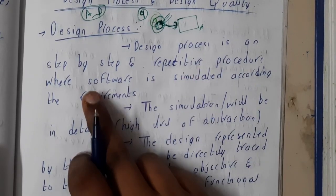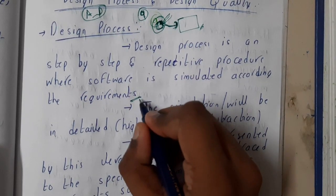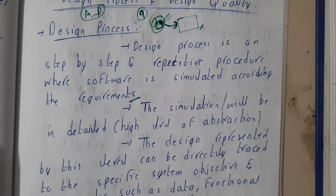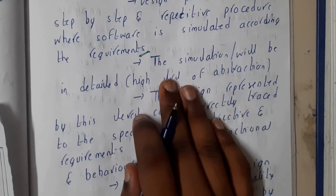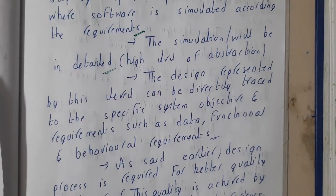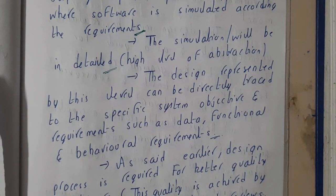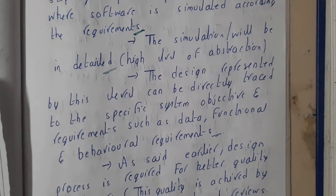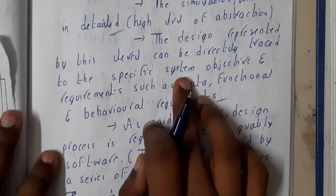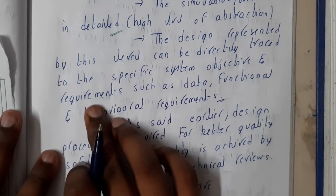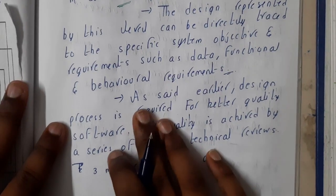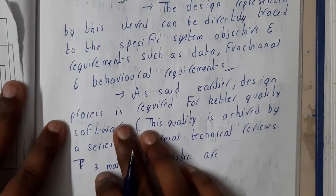The design process is a step-by-step and repetitive process where the software is simulated according to the requirements. Basically you will be making some kind of dummies - the simulation will be at a detailed, high level of abstraction. You will be simulating in detail, making an exact duplicate model. The design represented at each level can be directly tracked to specific system objectives and requirements such as data, function, and behavior requirements, which can be identified easily.